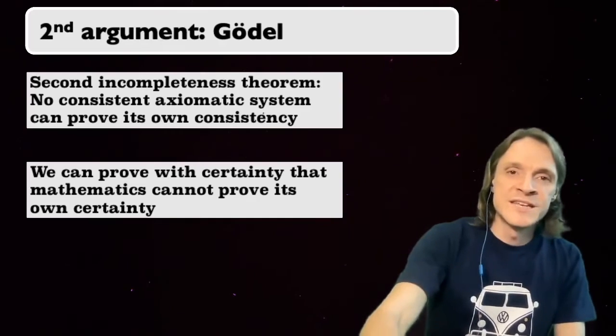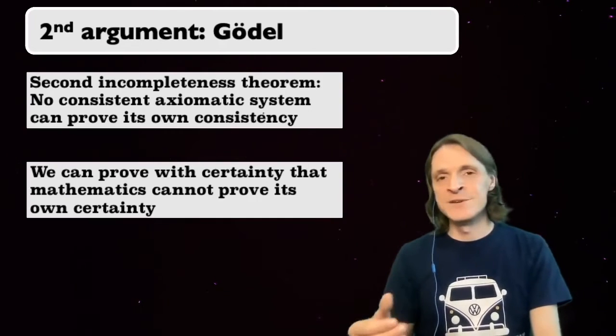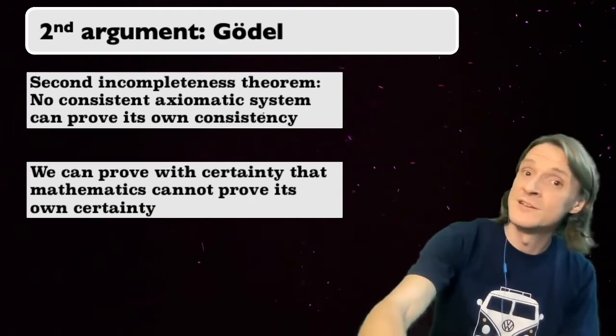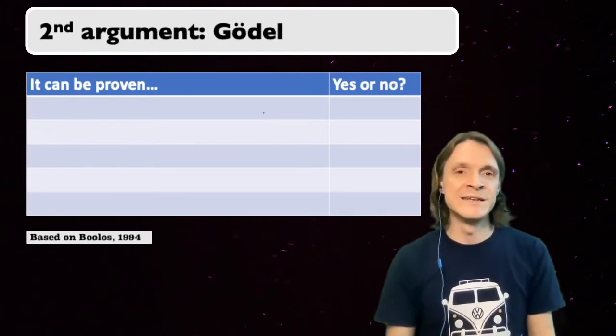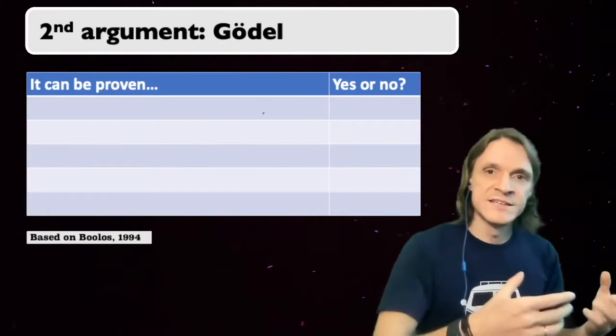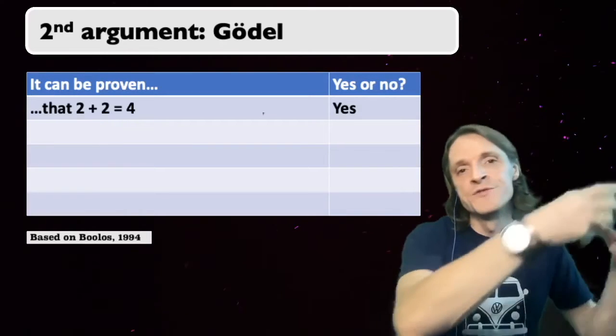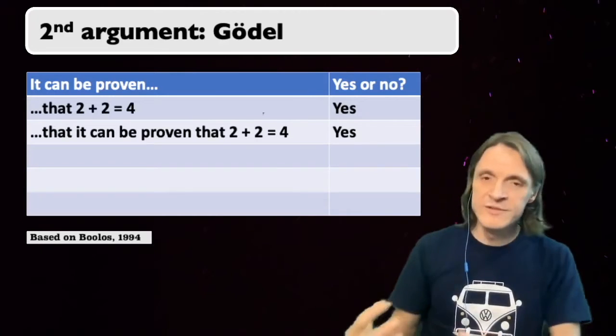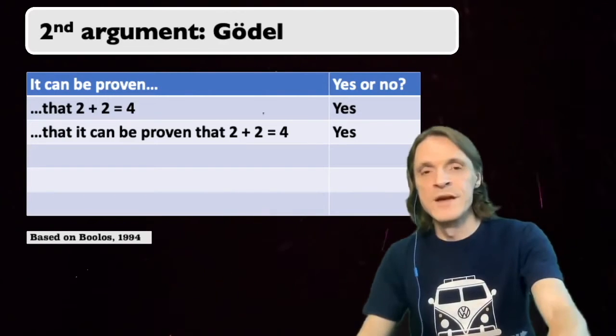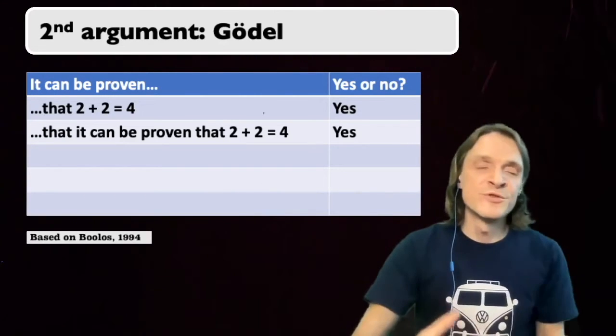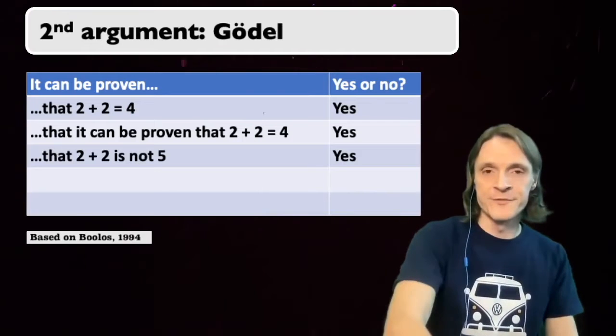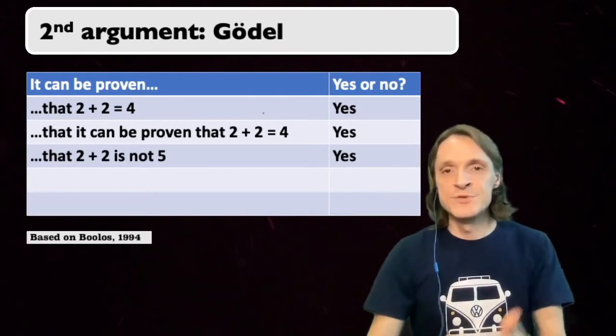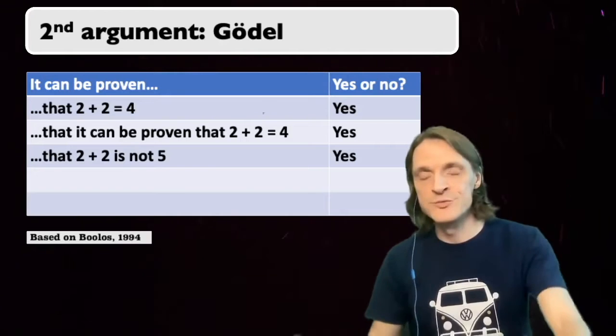To understand Gödel's second incompleteness theorem, I like the following simplified explanation. Try to follow my lead. In mathematics, it can be proven that 2 plus 2 equals 4. And it can be proven that it can be proven that 2 plus 2 equals 4. On the other hand, it can be proven that 2 plus 2 is not 5. And it can be proven that it can be proven that 2 plus 2 is not 5.